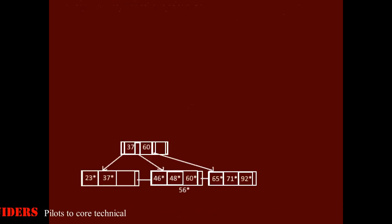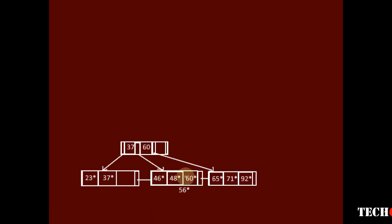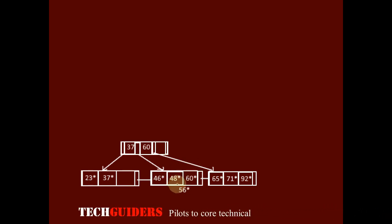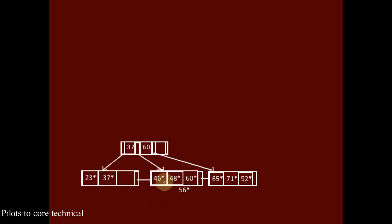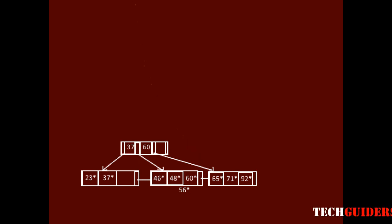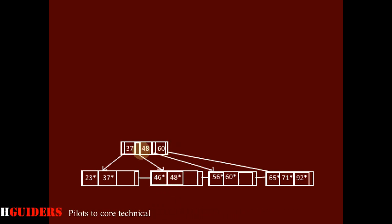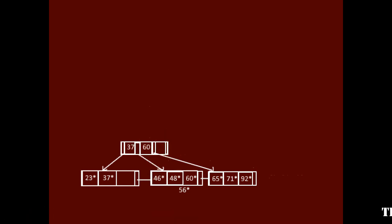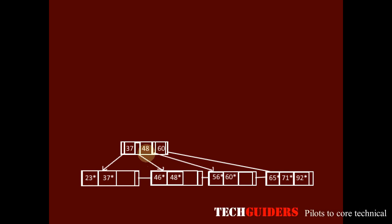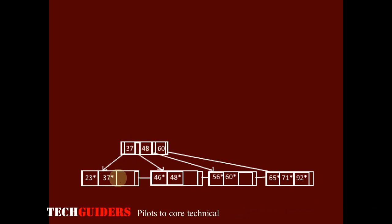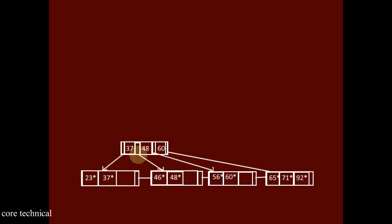Next is 56. 56 is greater than 37 and greater than 48, so it should occupy a place after 48. There is no space — an overflow will occur, so we split this node. 46 and 48 go to the left, and 56 and 60 go to the right. The key 48 is promoted to the parent level and occupies a place before 60. Now every key in the non-leaf node is the maximum of the keys on the leaf nodes of the left sub-tree.